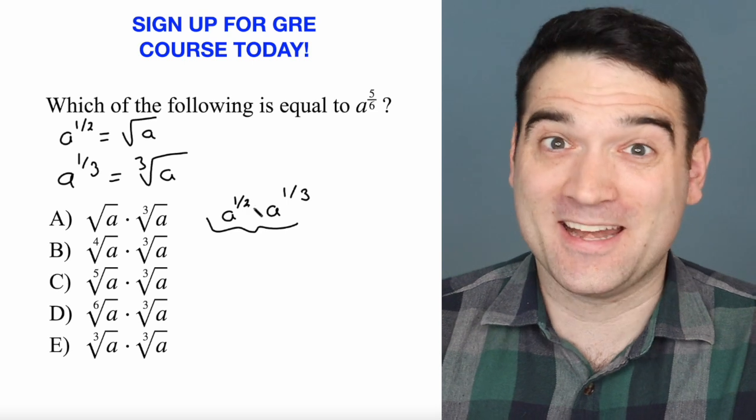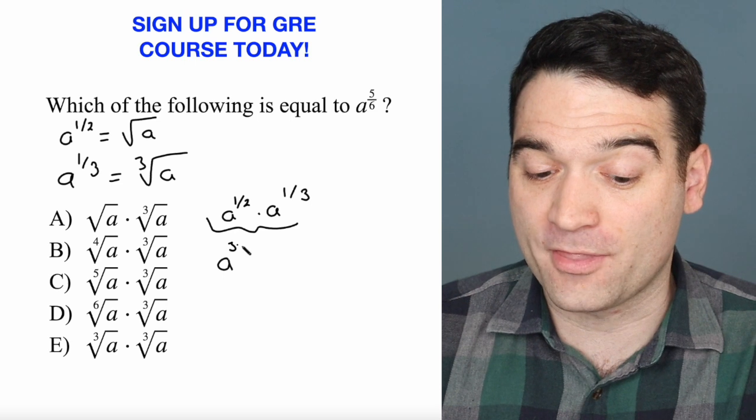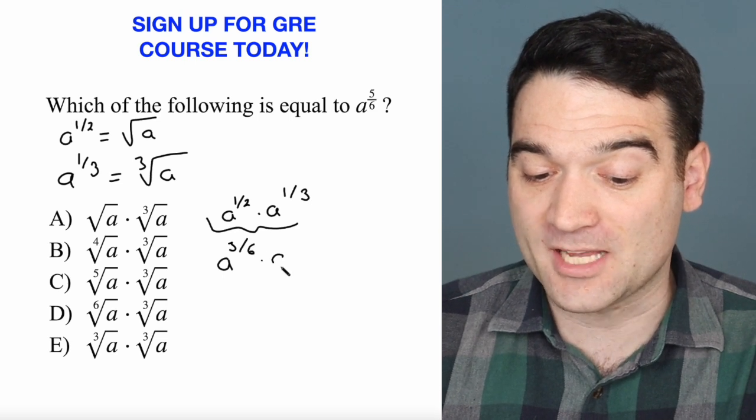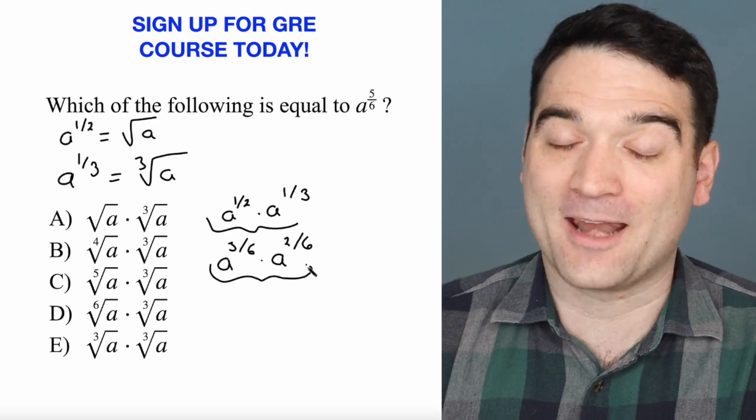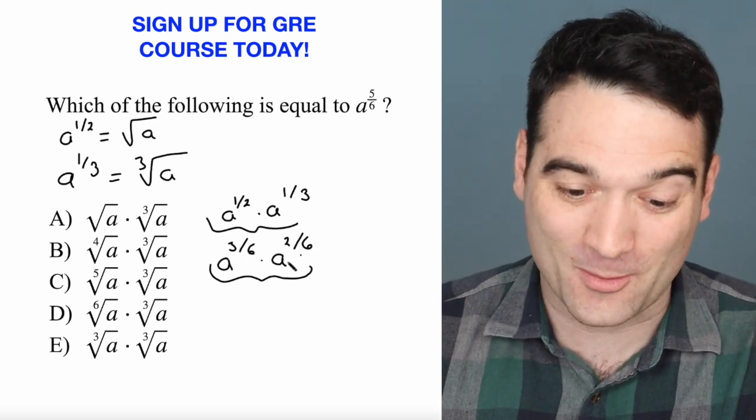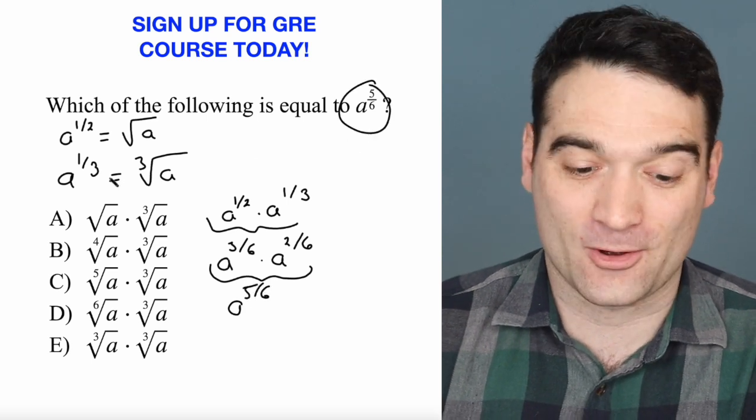And in order to do that, they need to have a common denominator. So I'm going to rewrite this as a to the power of 3 over 6 times a to the power of 2 over 6. And then I'm going to add them together. And wouldn't you know it, when I add 3 over 6 to 2 over 6, what do I get? I get a to the power of 5 over 6, which is the correct answer. Correct answer here is A.